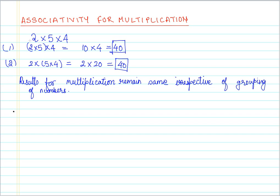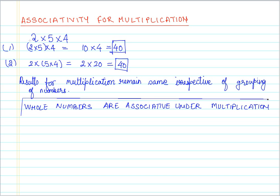Let me write this observation for you here. Results for multiplication remain same irrespective of grouping of numbers. We can conclude that whole numbers are associative under multiplication. Let me box it for you to highlight it.